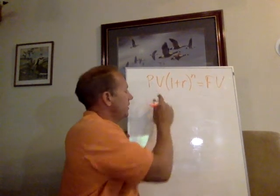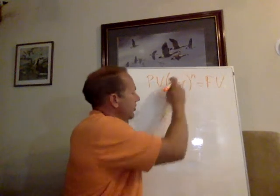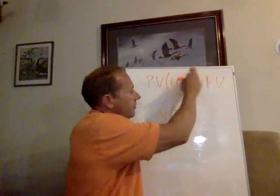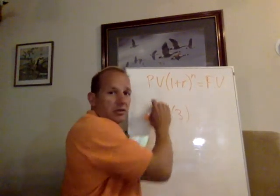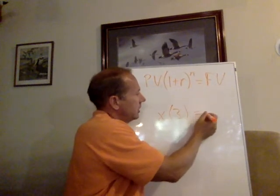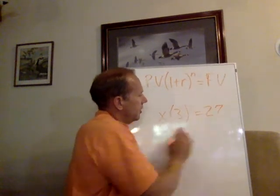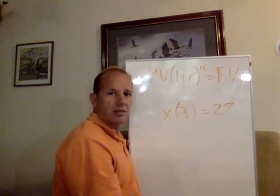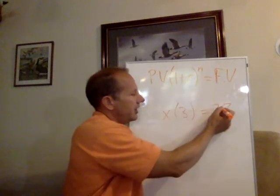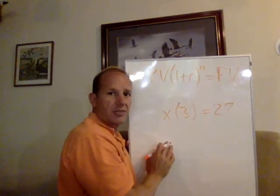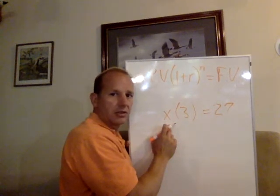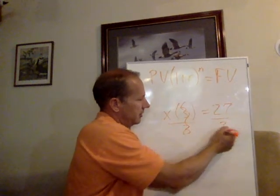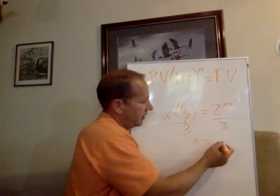Suppose I treat PV like x, and I treat all of the interest rate factor like 3. Suppose it amounted to 3, and PV is what we don't know, so I put an x there. And let's suppose I put in 27 for the future value. So now I have 3x = 27. How do I get x by itself, with that 3 tagging along? I divide both sides by 3 — that cancels out. So x equals 27 divided by 3, which is 9.